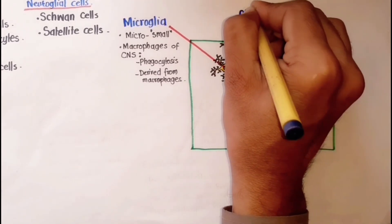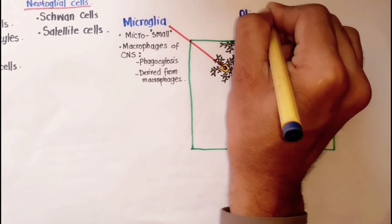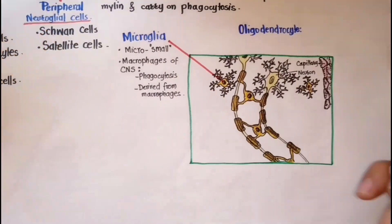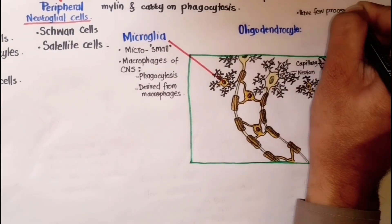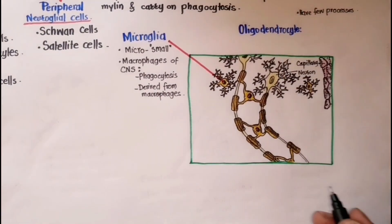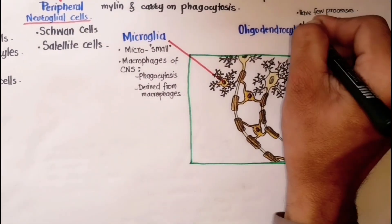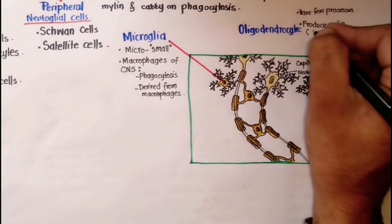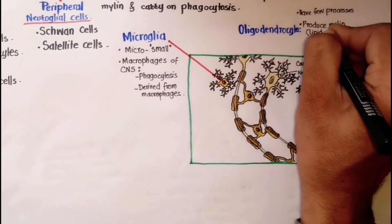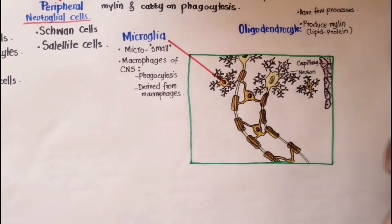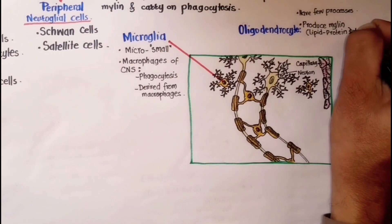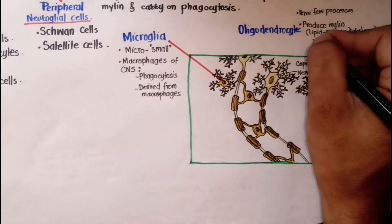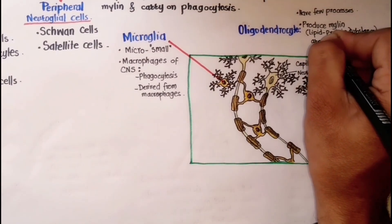After this we have the oligodendrocytes. Oligodendrocytes align along axons and have only a few processes. They produce insulating layers of myelin, which is a lipid-protein substance called the myelin sheath, around the axons within the brain and spinal cord.